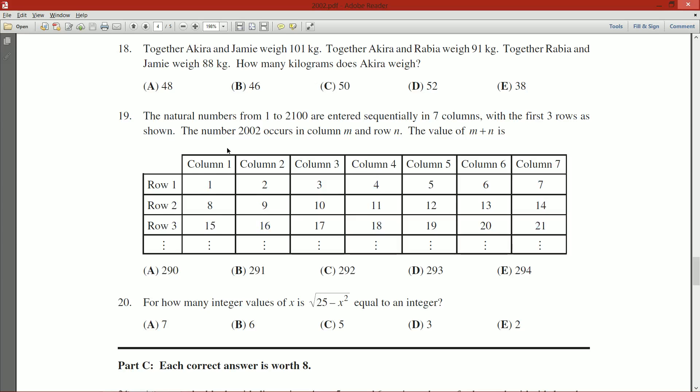So we have the first three rows shown. The number 2002 occurs in column M and row N. The value of M plus N is. Okay. So I think I've figured out the column system. The column tells me the remainder when I divide by 7. Now how about the rows? Row 1, we get the first seven numbers. And row 2, we get the next seven numbers. So I think we can write a formula out for the Mth row and the Nth column.